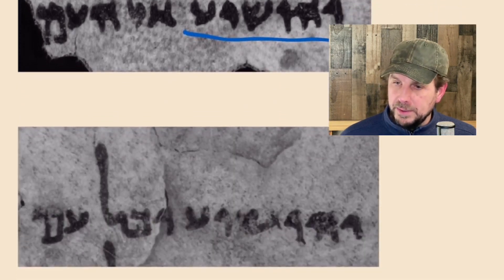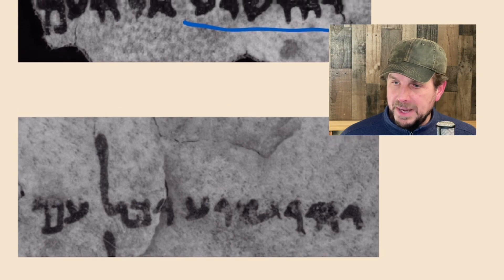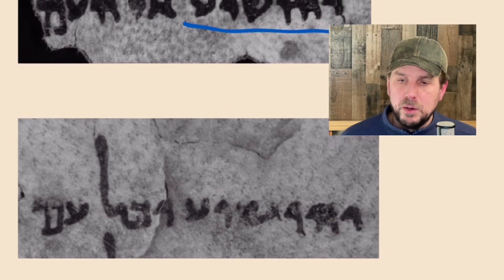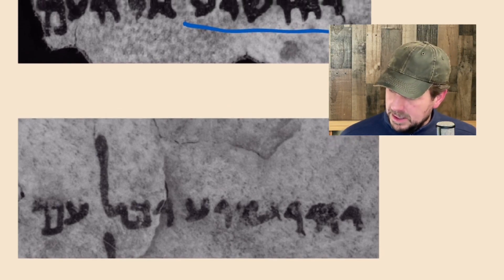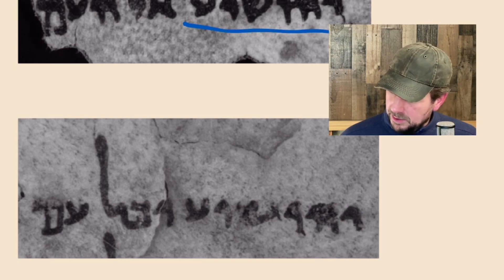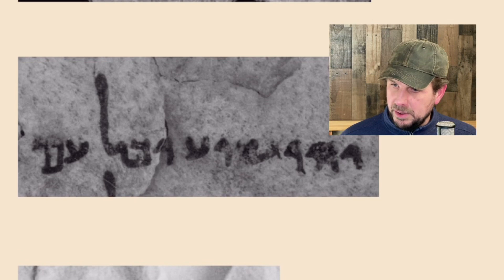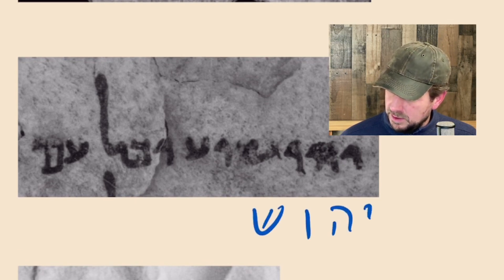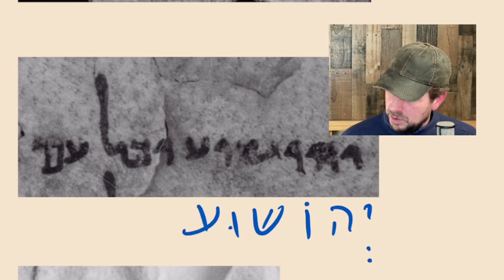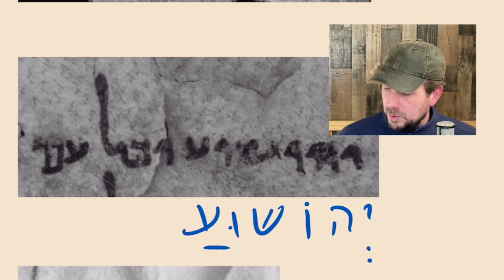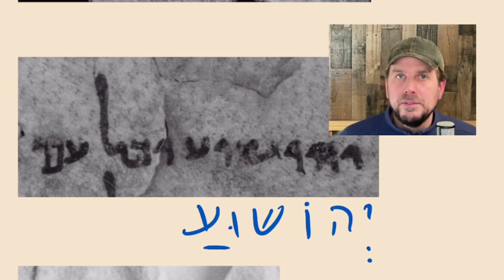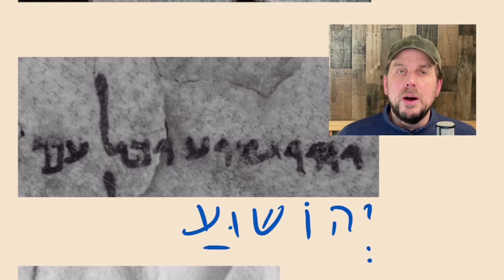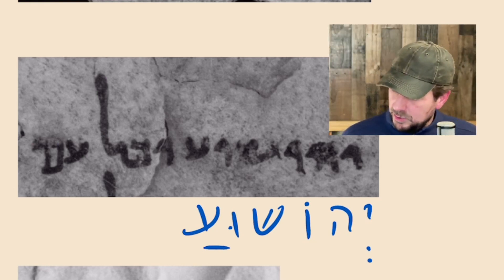Here's another one, from the passage Vayaka Mihoshua — 'And Joshua rose up.' As you see here, we have Yod, He, Vav, Shin, Vav, Ayin — Yehoshua. So the spelling with the Vav between the Shin and the Ayin is quite common in ancient Jewish writing.